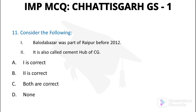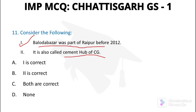Question number 11: Baloda Bazar was part of Raipur before 2012 and is called the cement hub of Chhattisgarh. Both statements are absolutely true — Baloda Bazar was part of Raipur in 2012, and there are many cement factories here, so it is called the cement hub of 36 (Chhattisgarh).